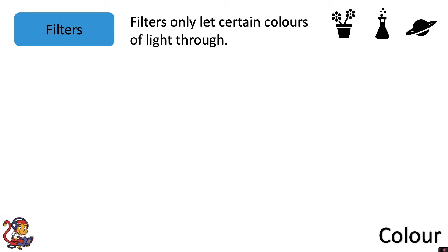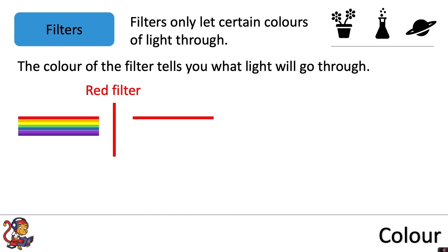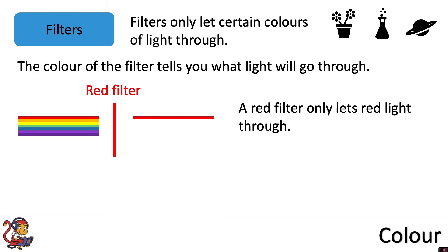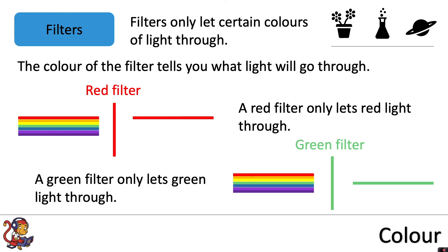In the final part of this video we'll look at coloured filters. Filters only let certain colours of light through. The colour of the filter tells you what light will go through. So a red filter only lets red light through, and a green filter will only let green light through.